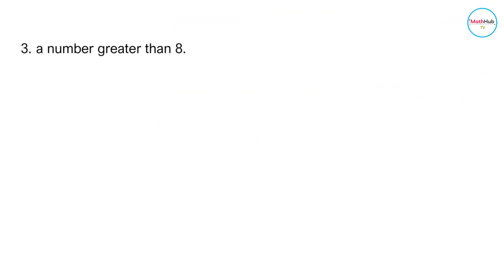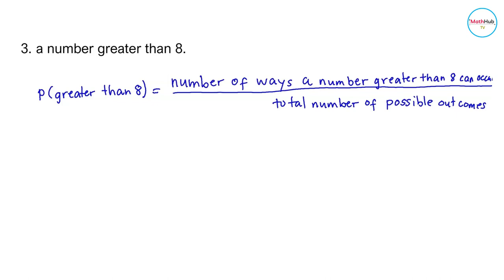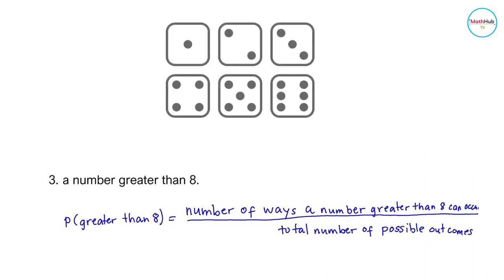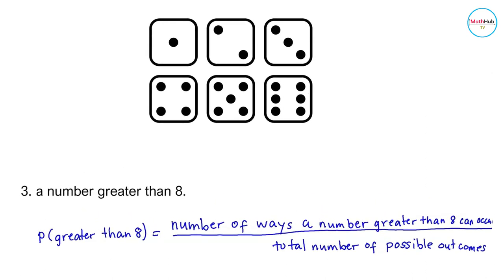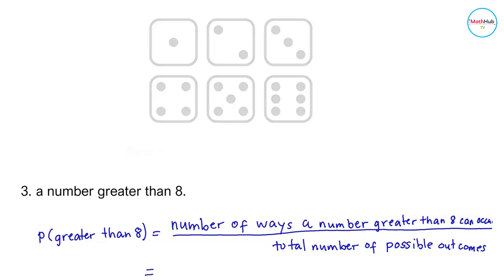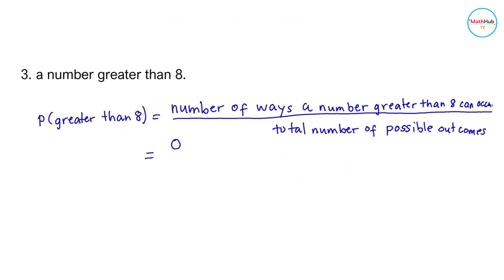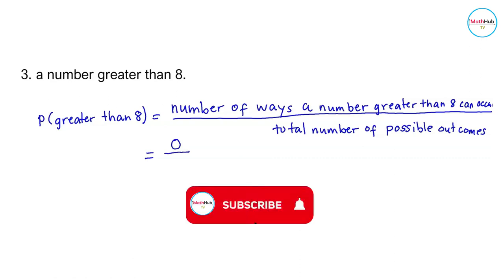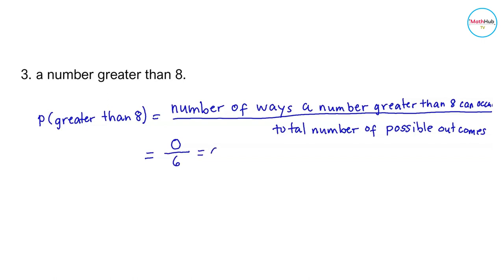Next, we compute the probability of rolling a number greater than 8. This is computed by dividing the number of ways a number greater than 8 can occur by the total number of possible outcomes. Looking at the set of equally likely outcomes, there are no numbers greater than 8, so the number of ways this can occur is 0. The total number of possible outcomes is still 6, so 0 divided by 6 equals 0. The probability of rolling a number greater than 8 is 0.